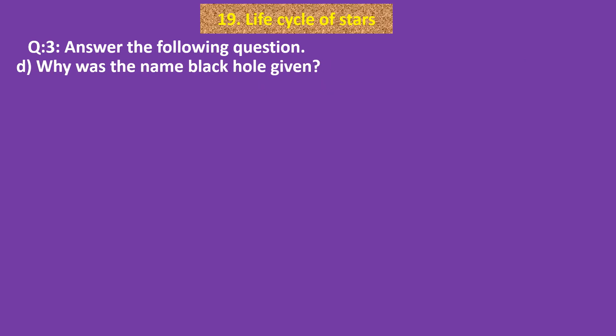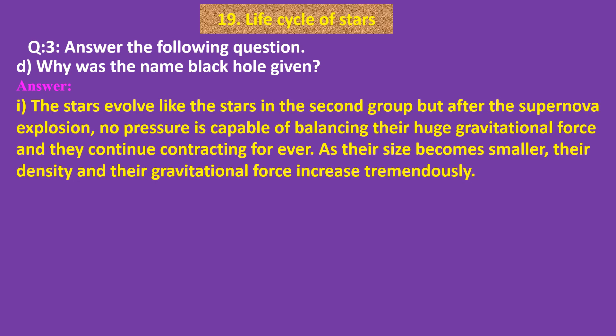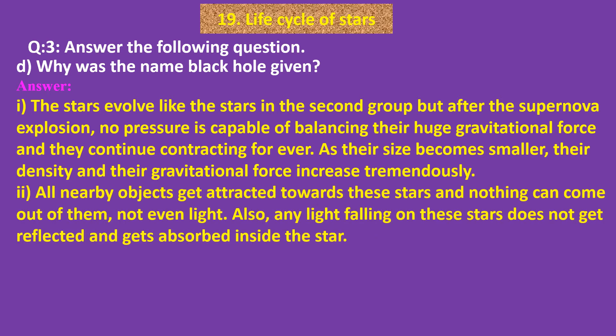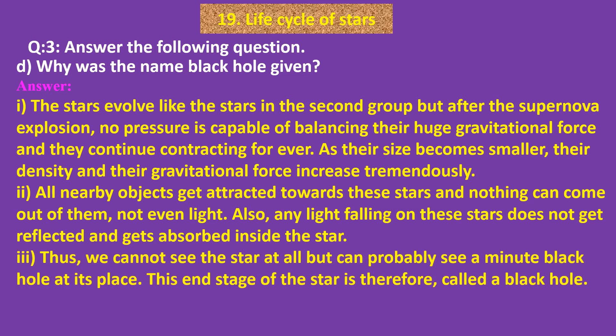D. Why was the name black hole given? Answer: Stars that evolve like the second group — after the supernova explosion, no pressure is capable of balancing their huge gravitational force and they continue contracting forever. As their size becomes smaller, their density and gravitational force increase tremendously. All nearby objects get attracted towards these stars and nothing can come out of them, not even light. Any light falling on these stars does not get reflected and gets absorbed inside the star. Thus we cannot see the star at all, but can probably see a minute black hole at its place. This end stage is therefore called a black hole.